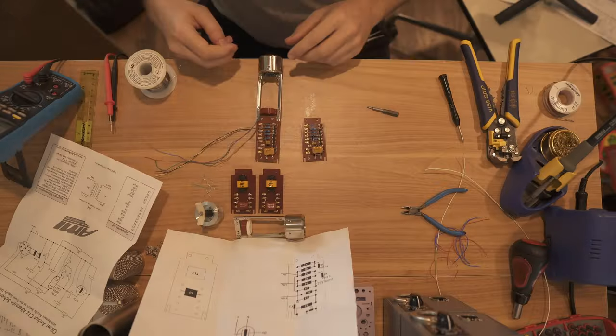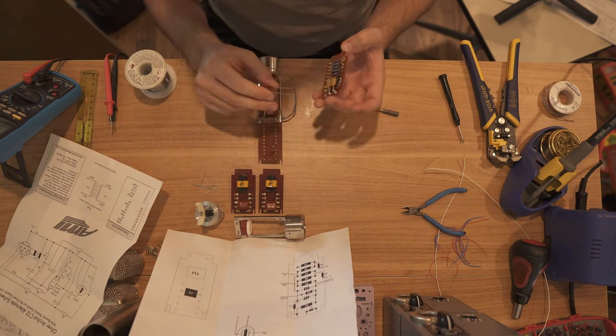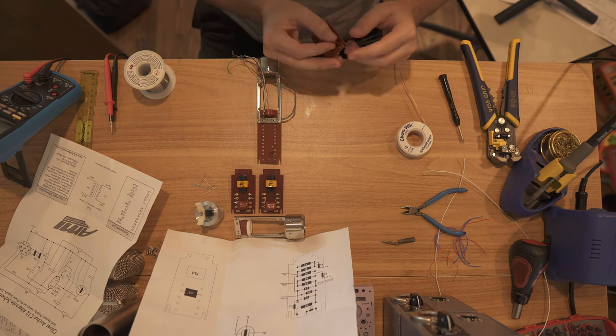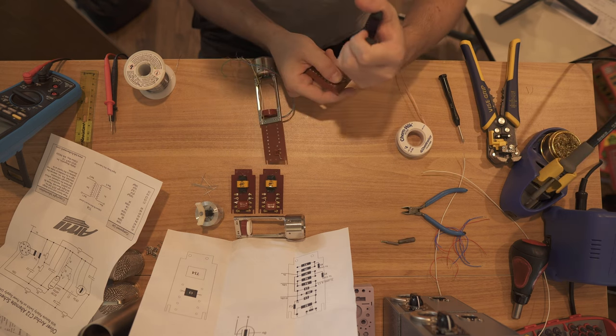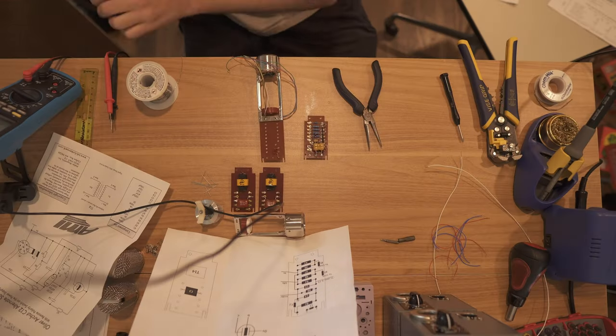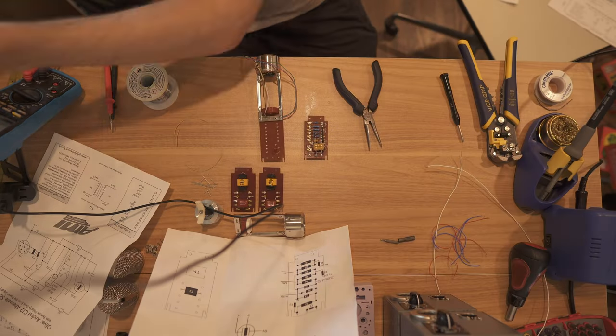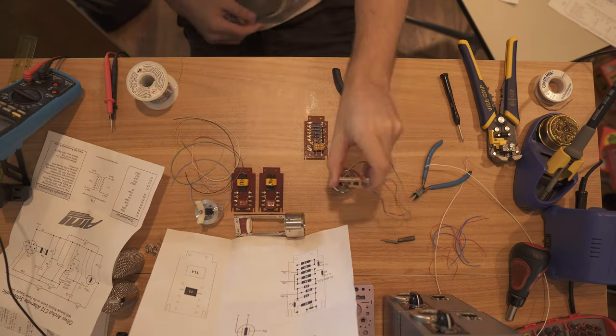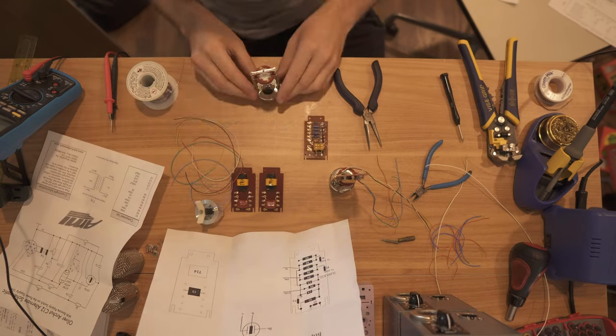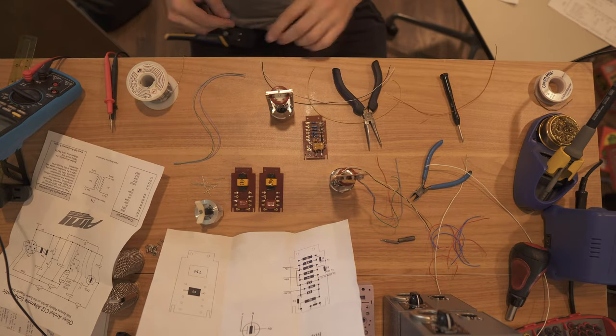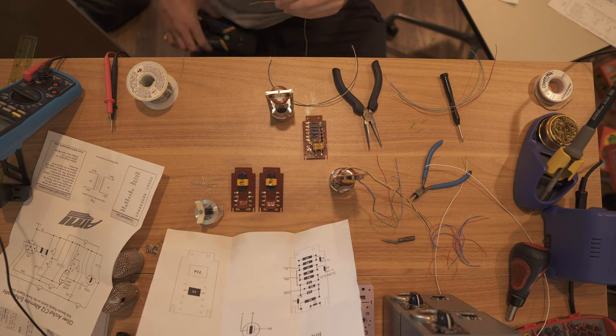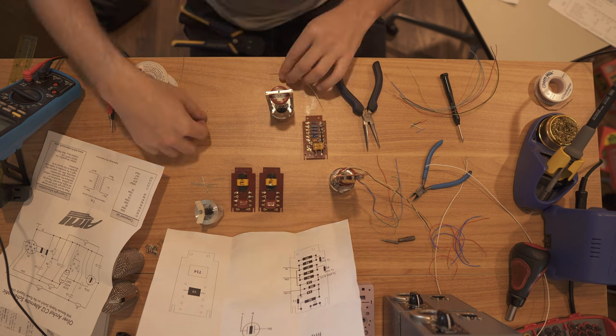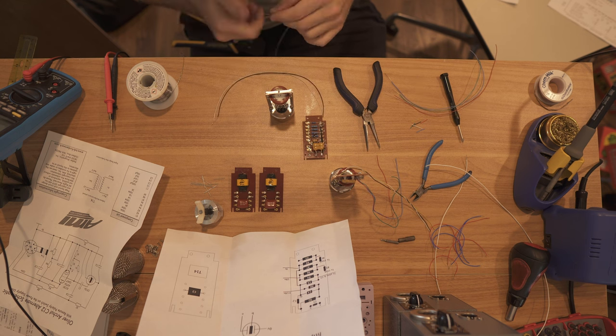Those two boards are finished, and they look relatively neat, but now we're going to hook up all the additional wires to the tube socket and to the connectors. The connectors on both of these microphones, the C12 and the U47, they're 7-pin connectors, where ground is in the center, and then you have your power supply pins and your audio pins.